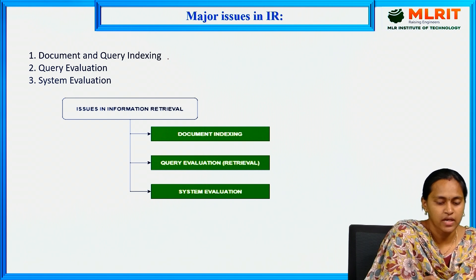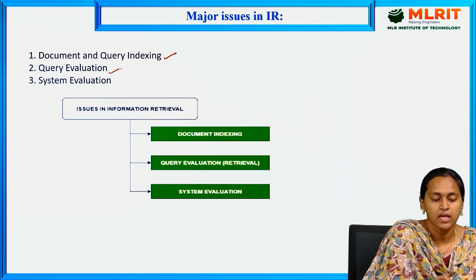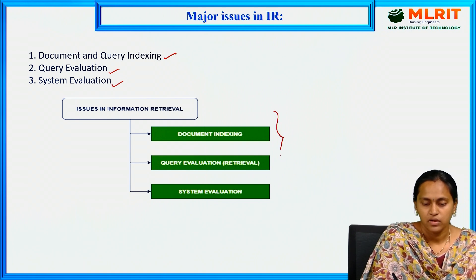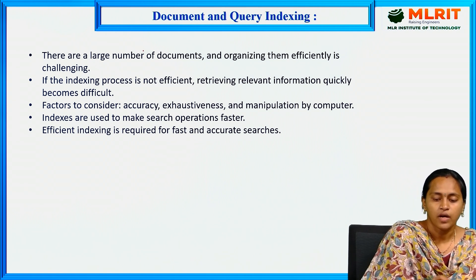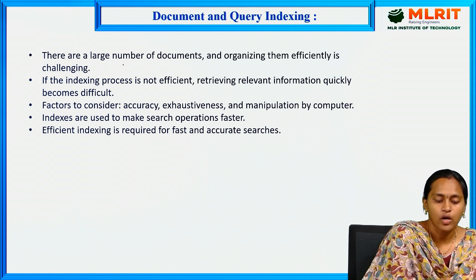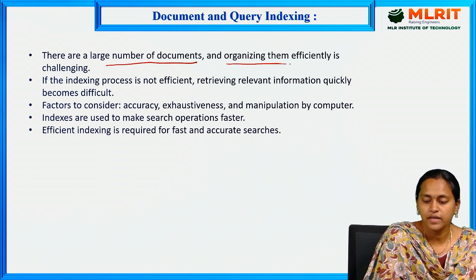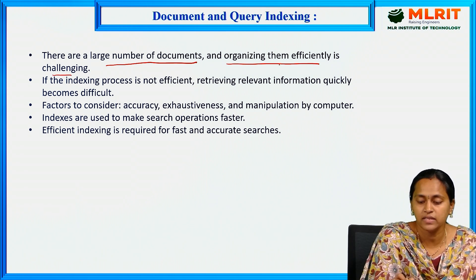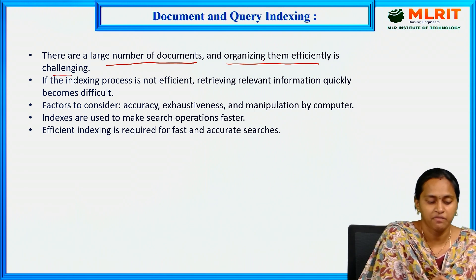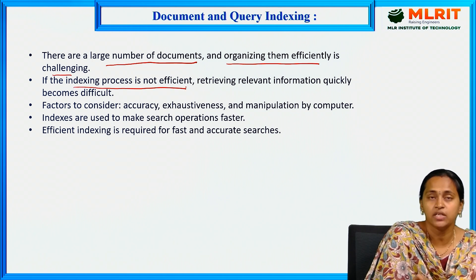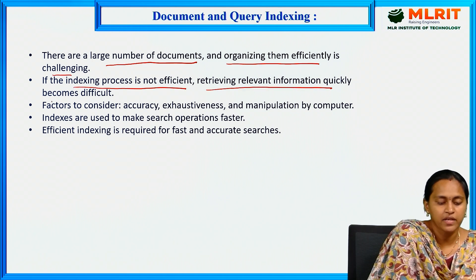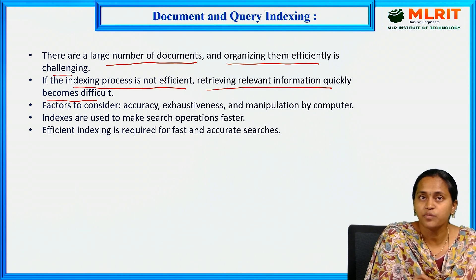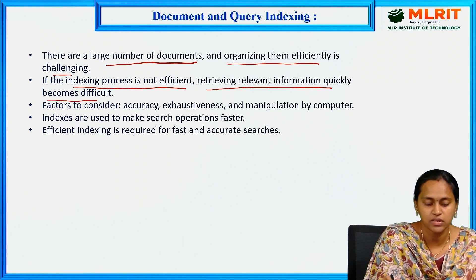We have some major issues in IR system: document and query indexing, query evaluation, and system evaluation. Regarding document and query indexing: there are a large number of documents, and organizing them efficiently is challenging. If the indexing process is not efficient, retrieving relevant information quickly becomes difficult.